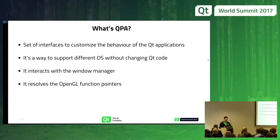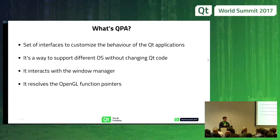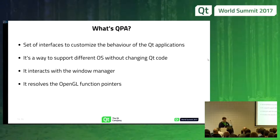What's QPA, or Qt platform abstraction? It's a way to communicate with the operating system so our applications don't need to be rewritten for every different operating system. It gives the user a way to specify how to open a window, close a window, and get the OpenGL functions. There are different QPAs, one for each platform: Windows, Linux — which has two: Xcb and Wayland — Mac OS, and many more. The important thing is that it allows us to resolve the OpenGL function pointers. This is where the magic happens.